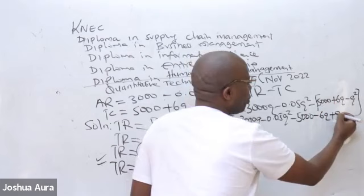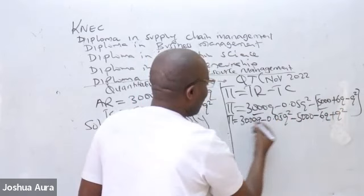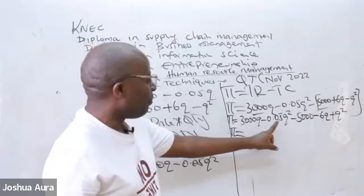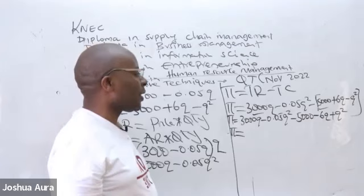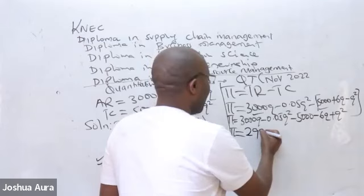So go ahead and put like terms together. When you put like terms together, what do we have? We have 3,000Q minus 6Q. 3,000Q minus 6, that will give me what figure? 2,994Q.